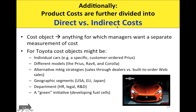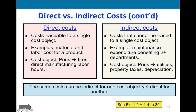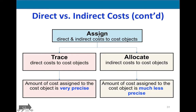Direct costs can be directly traced to a single cost object — they're easy, precise, and straightforward to deal with. Indirect costs cannot be traced to a single cost object, so we have to allocate them — such as overhead — using different methods. Depending on the method chosen, the allocation amount will differ significantly, which means the manager's decisions about costs and prices will also differ. Dealing with indirect costs is much more challenging and much less precise.